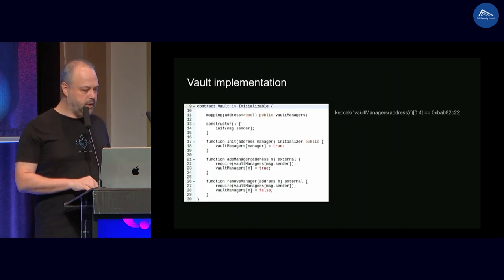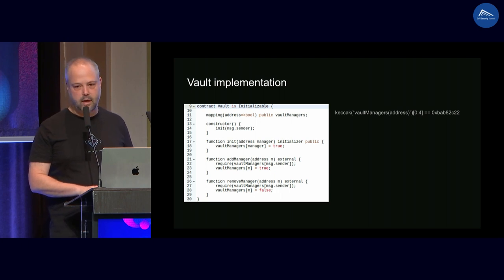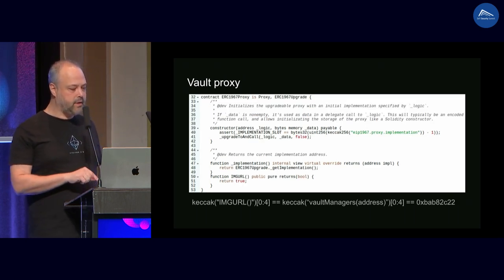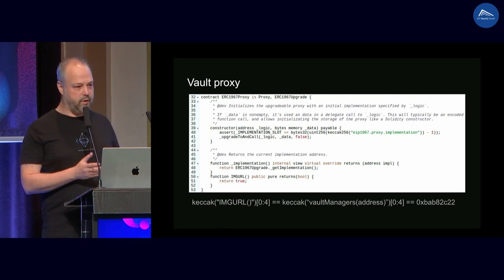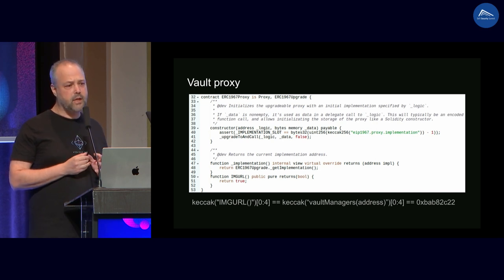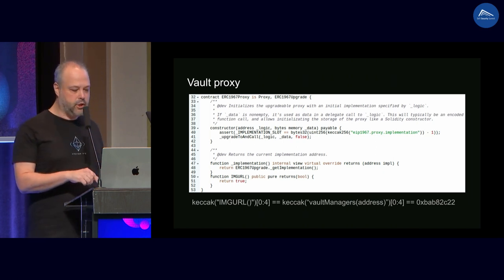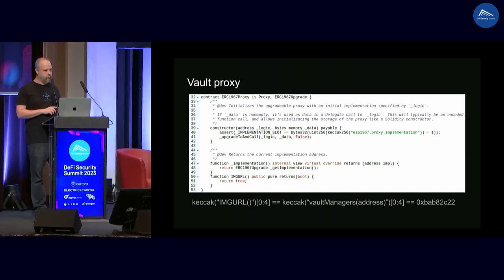We demonstrate this with a simple vault implementation. It has a mapping of vault managers and functions for adding and removing managers, which can only be called by current managers — supposedly safe. The proxy seems like a standard proxy except for a small pure function called imageUrl at the bottom. imageUrl is a pure function that returns true. An auditor might wonder why this proxy has this pure function, but most people wouldn't care much because it's just a pure function that doesn't touch state. It turns out it's quite bad because it shares the first four bytes of its hash with the vaultManagers mapping getter, meaning it will now return true for any address you check in this mapping.